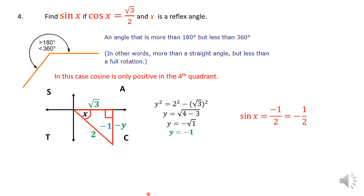So the sine of angle x is negative 1 over 2, making the whole ratio negative one half. That is the only solution for sine x. We are not finding the value of x, but finding what the sine ratio is. In the fourth quadrant the sine ratio is negative, and our ratio is indeed negative one half.